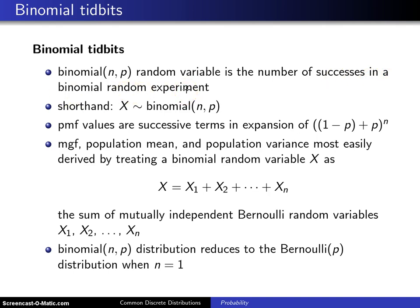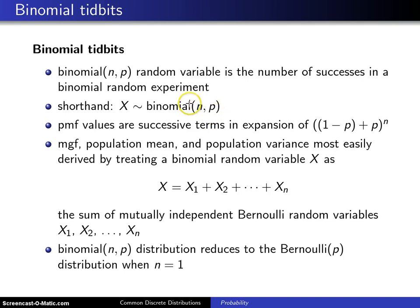Second of all, there is a shorthand that is used. The way you read this shorthand is: the random variable X is distributed as a binomial random variable with parameters N and P. And we write out the word binomial here.